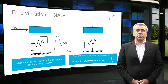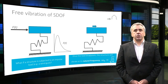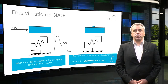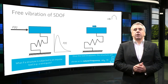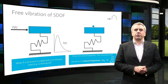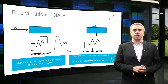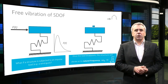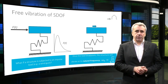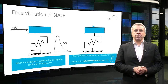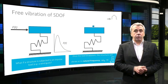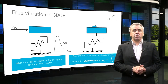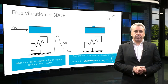Frequency tells us how fast the mass completes one period of its motion from left to right and back. Below the animation you can also see the expression for the natural frequency of vibration of the mass-spring system. This frequency is called the natural frequency, because the system performs vibration at this frequency in the absence of any external force. Therefore, it can be said that it is natural for the system to vibrate at this frequency.